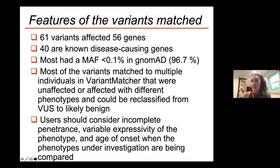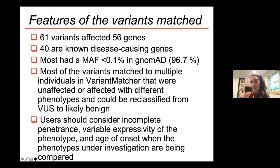When we looked at our first 61 matched variants — covering 56 genes, 40 of which were disease-causing — most of the variants were very rare, less than 0.1% in the population, and had been classified as variants of uncertain significance by a clinical lab. Users matched to many individuals in our database who had different phenotypes or were unaffected, and based on that information, were able to reclassify the variants as likely benign rather than VUS.